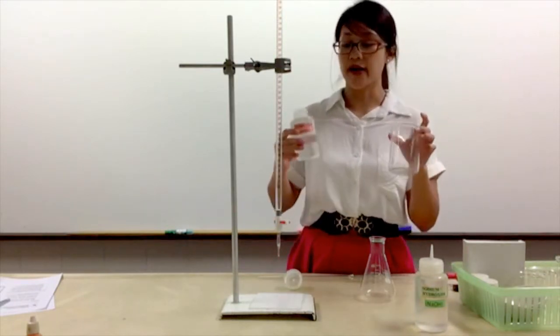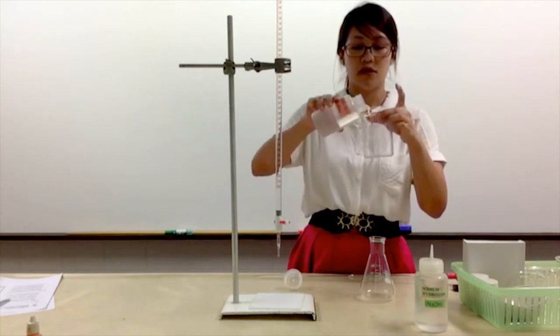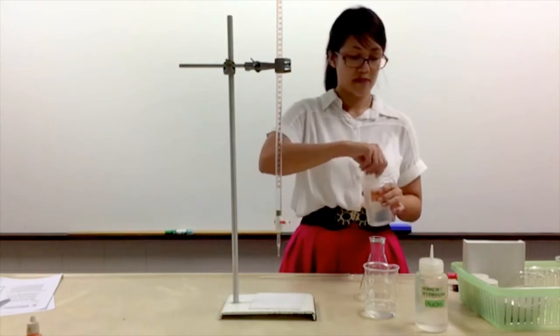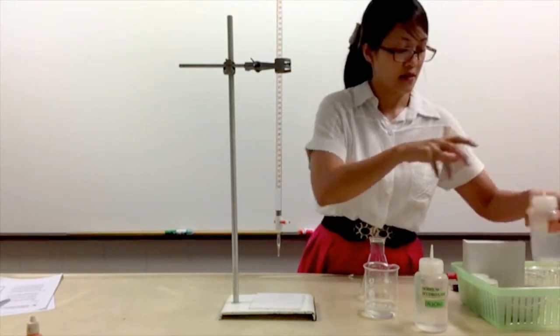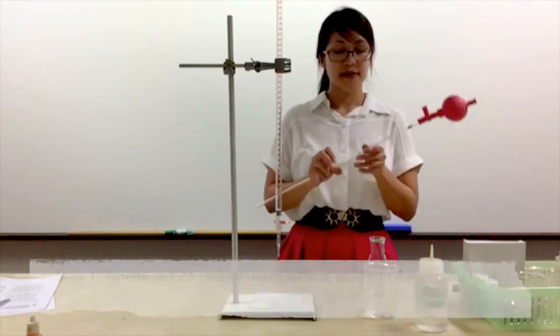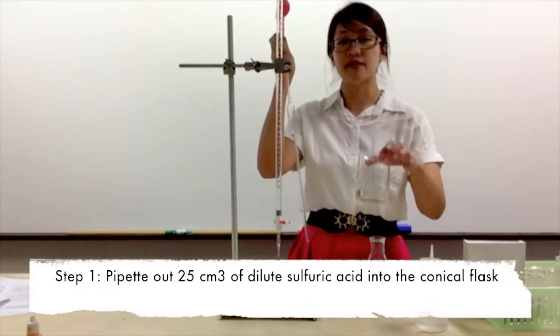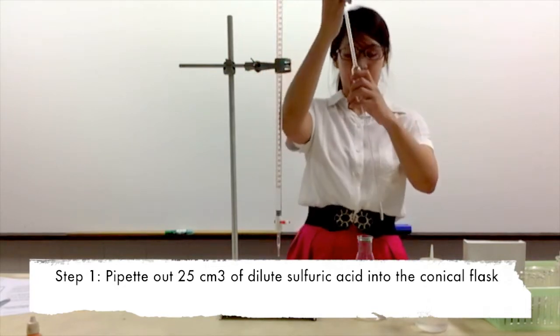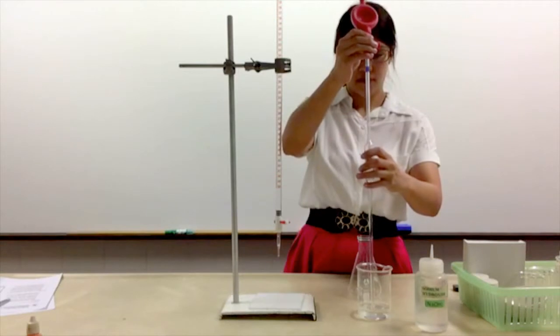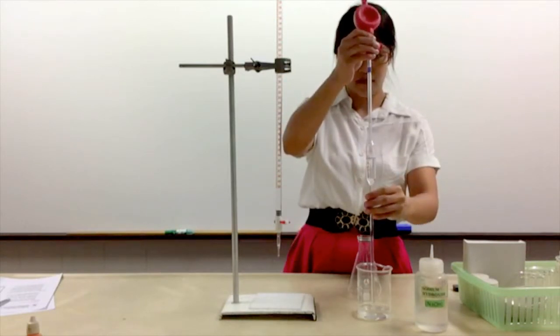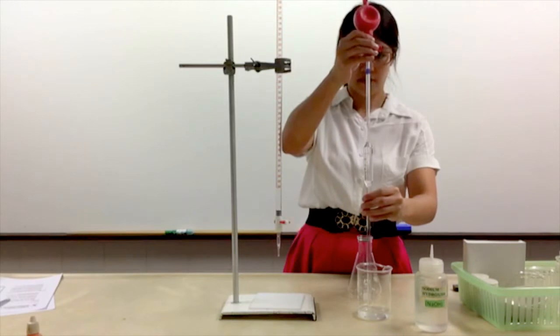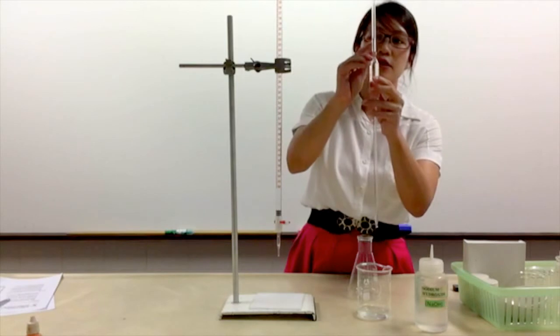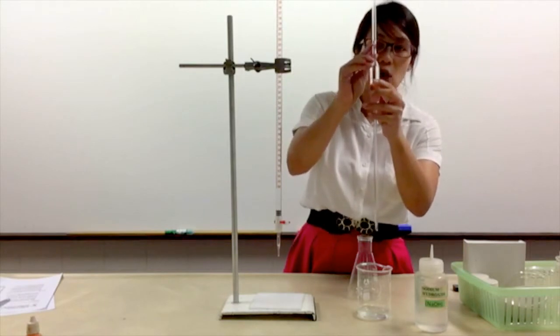So pour out your acid into a beaker. Step one: we have to prepare 25 cm³ of acid into the conical flask. Now you will have to make sure that the meniscus is directly below the brown line.